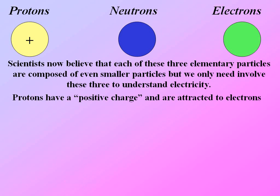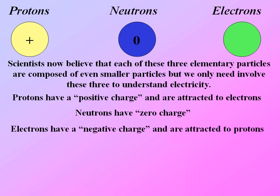Protons have a positive charge and are attracted to electrons. Neutrons have zero charge. Electrons have a negative charge and are attracted to protons.